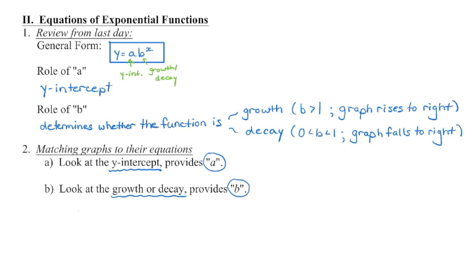If b is greater than 1, we have a growth function, and on that graph we're going to see that over time, generally speaking, we're rising to the right, we're increasing in value. If b is a number that is less than 1 but greater than 0, so basically between 0 and 1, we have what we call a decay function, where generally over time we're losing value exponentially, that graph is falling to the right.